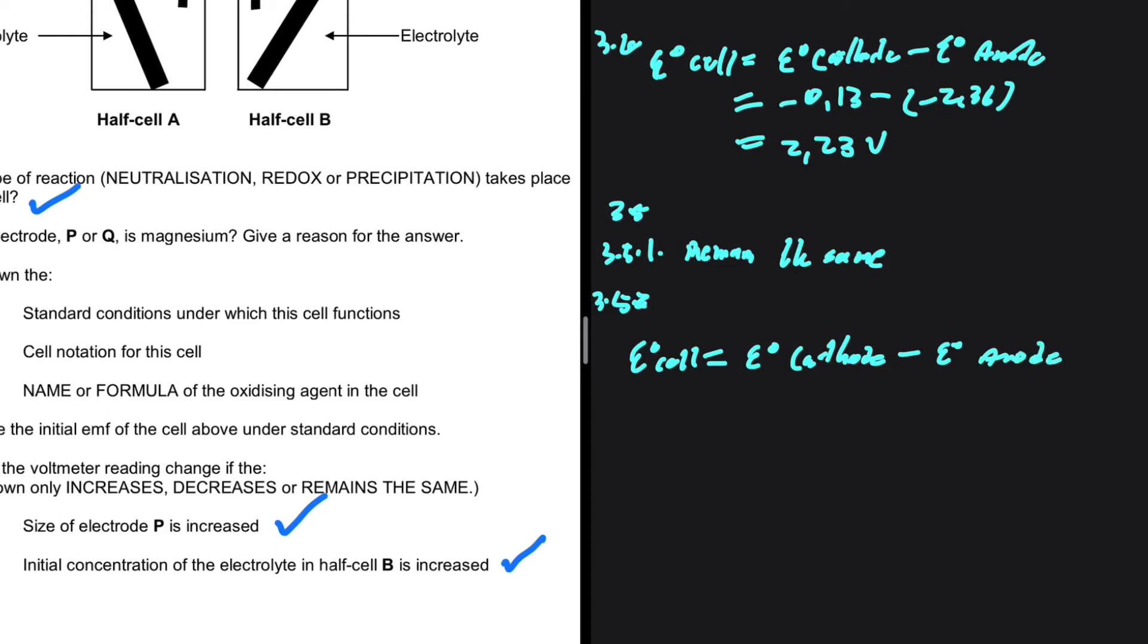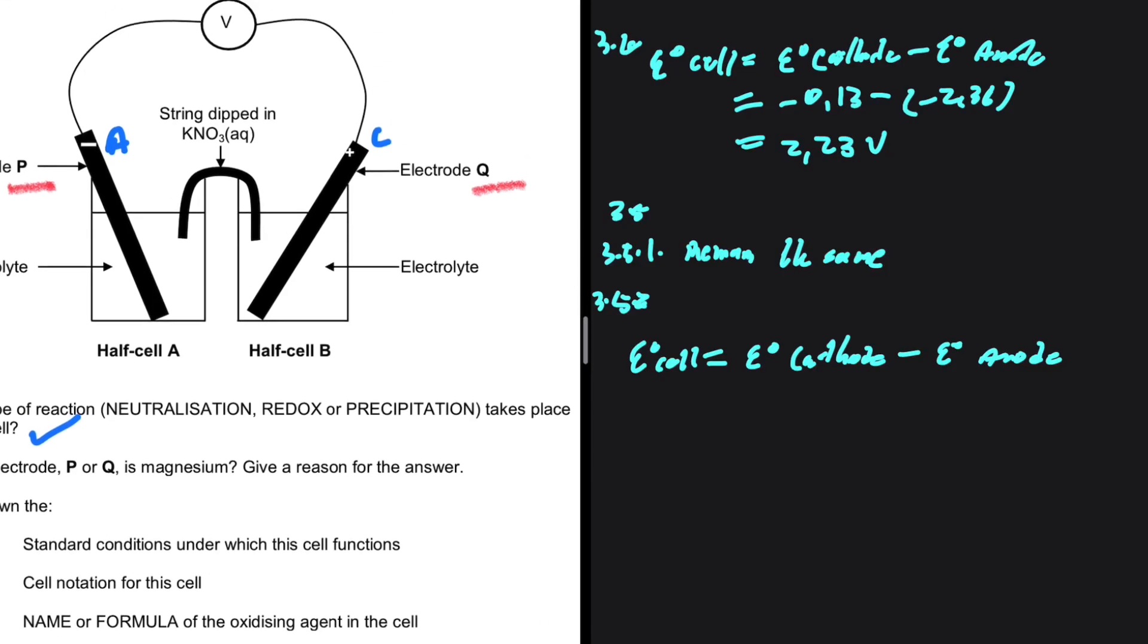We are increasing the concentration in half cell B. Half cell B is where we have our cathode. So the potential at the cathode is increasing. If the potential at the cathode is increasing and the potential at the anode remains the same, then the initial EMF of the cell is going to increase. So the answer here is increases.